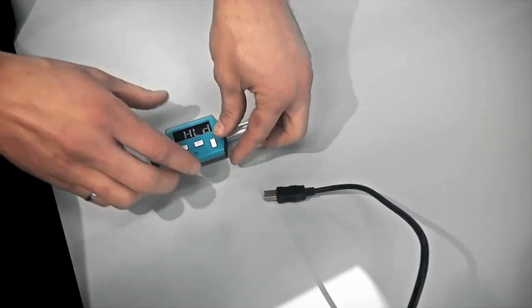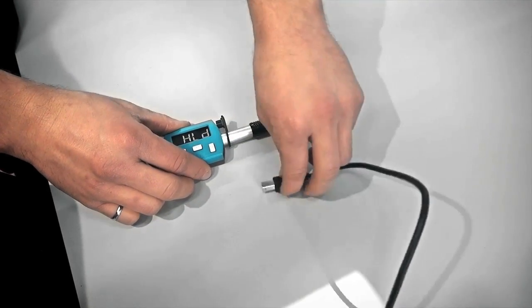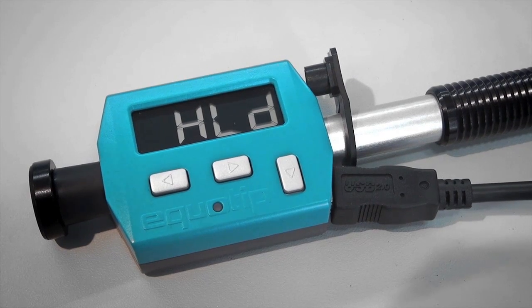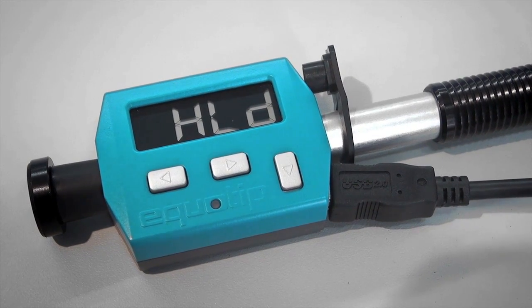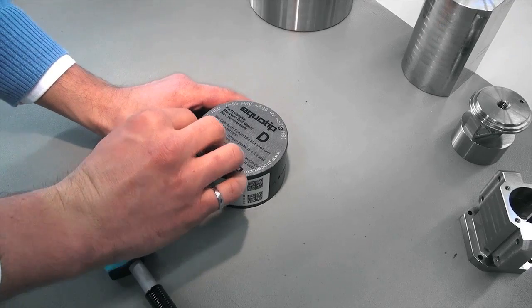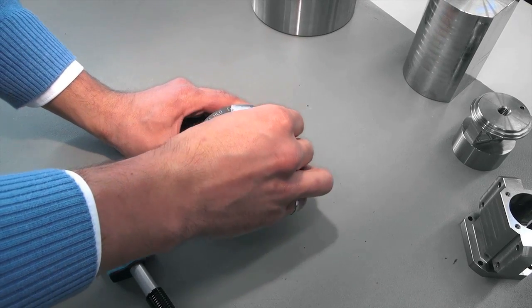Before using the instrument, please make sure the battery is charged. When fully loaded, you can make at least 20,000 measurements. To turn the instrument on, press any key. When you use the instrument for the first time, the Lieb is the default hardness scale.